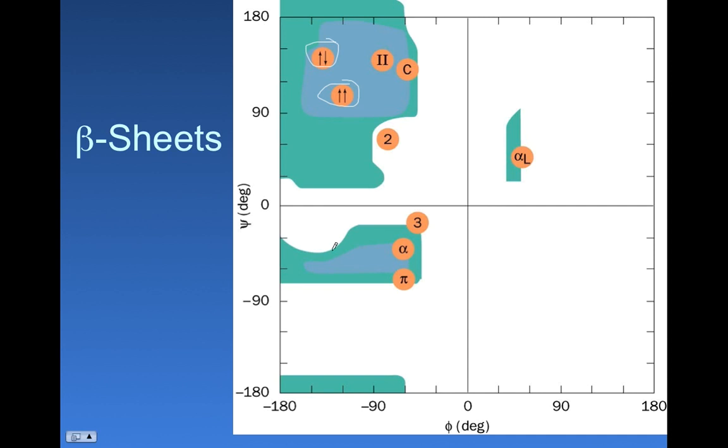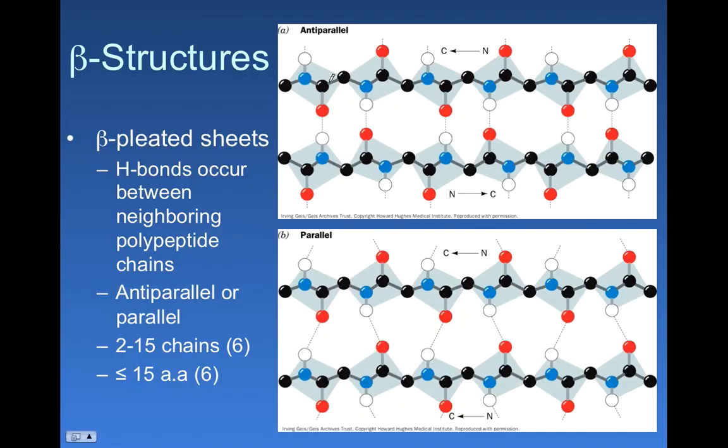These arise from combinations of phi and psi that have low energy conformations or predicted low energy conformations. So these are sheets. They're flat. They're not like helices at all.